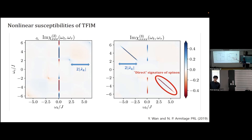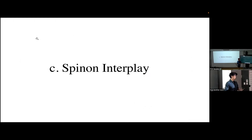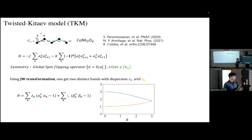Up to this point, I've given the introduction of how 2D spectroscopy is gaining recognition as a method to detect fractionalization — work pioneered by Peter Armitage in 2019. Now I'll move on to show how 2D spectroscopy can be used in a further way, using spinon interplay to distinguish microscopically very similar models that have qualitatively similar linear response but qualitatively different nonlinear response.